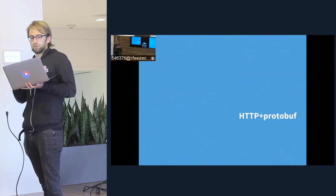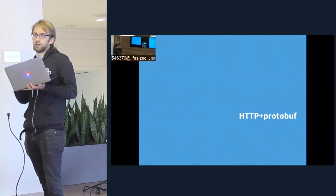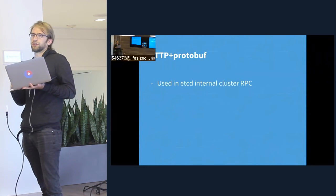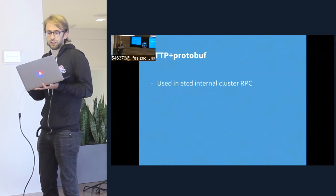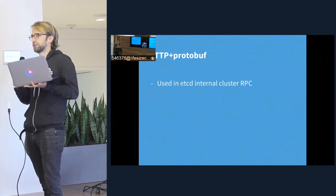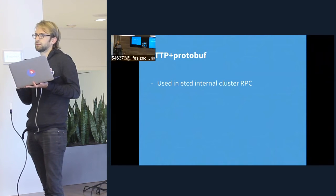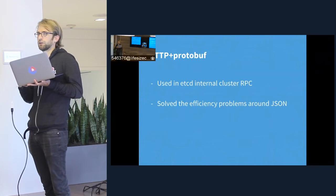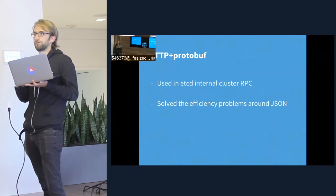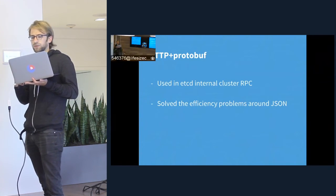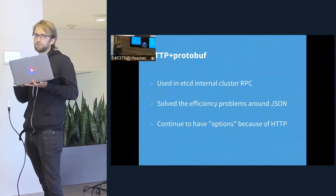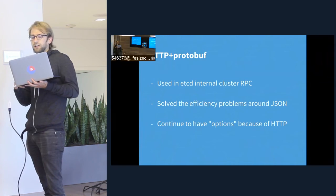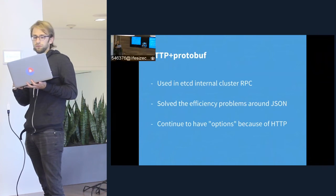Another option is still using HTTP as the transport, but instead of JSON, using Protobuf as the encoding mechanism. We actually use this internally for etcd, our distributed key-value store. etcd exposes a JSON API to clients, but all the internal RPCs between cluster members implementing the Raft protocol use Protobuf messages going over HTTP. That's much more efficient than JSON for encoding and decoding those messages. The nice part is that since you're just posting to an HTTP service, it allows you the flexibility to migrate to alternative encoding mechanisms while still using HTTP as the transport.